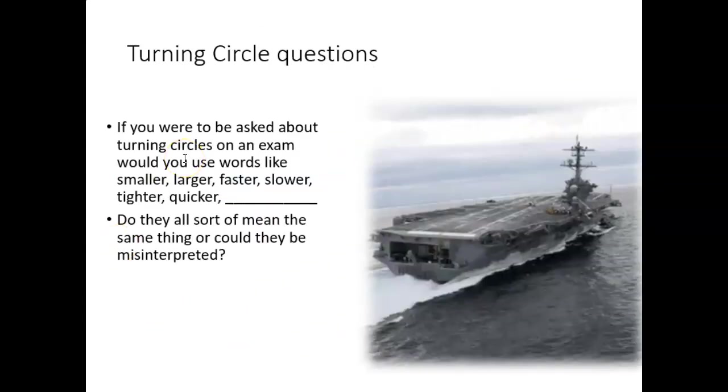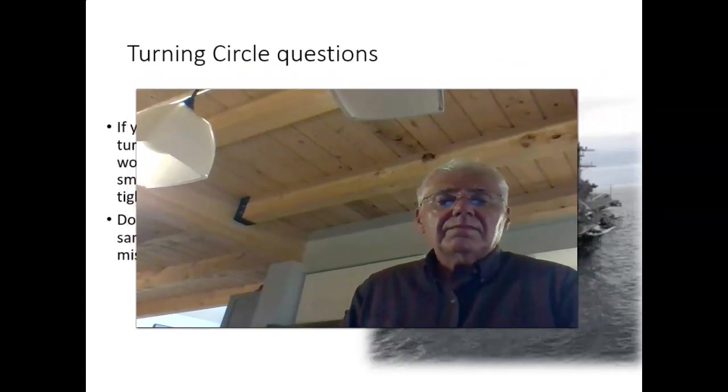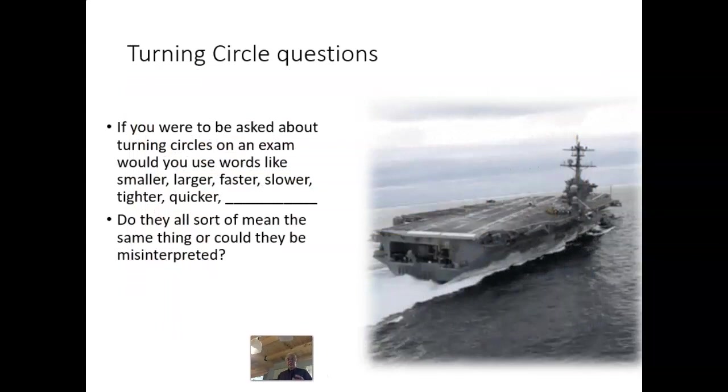On a test question, just don't tell me fat vessel turns better, quicker. Those wouldn't be the right words. You'd have to say beamier vessel will turn a smaller tactical diameter. Also, a smaller final diameter as well. Those questions, if you were to be asked that question on an exam about turning circles, you would be inclined to use words like smaller, larger, faster, slower, quicker, tighter. What I want to ask you is, do they all mean the same thing? Does smaller mean the same as faster? Does smaller mean the same as tighter?